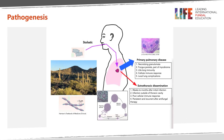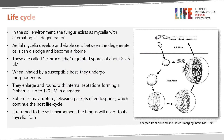This cartoon displays the life cycle of the fungus. In the soil environment, the fungus exists as mycelia with alternating cell degeneration. Aerial mycelia develop, and viable cells between the degenerate cells can dislodge and become airborne — these are the arthroconidia. When inhaled by a susceptible host, they undergo profound morphogenesis by enlarging and rounding up to form a spherule, which may grow to 120 microns in diameter. Spherules may rupture, releasing packets of endospores which continue the host life cycle. If the fungus returns to the soil environment, it will revert to its mycelial form.